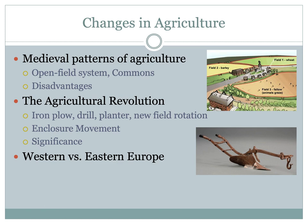England actually had the most striking agricultural improvements. The Agricultural Revolution consists of new techniques and new technology designed to increase agricultural output. Some examples of these new techniques and technologies included the iron plow, the drill planter, and new field rotation.